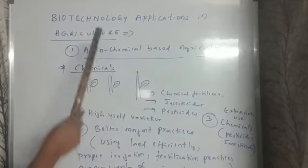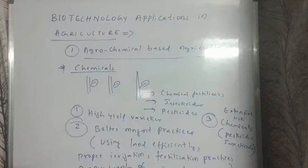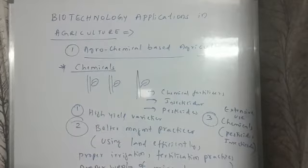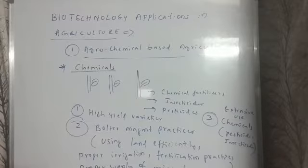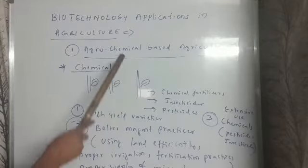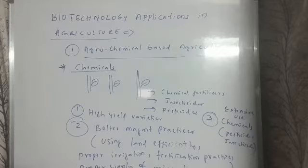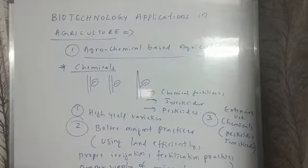In this class, we will discuss about the biotechnology applications in agriculture. Now before getting into the topic, let's understand the methods to increase food production. There are three options or methods to increase food production. The first one is agrochemical based agriculture. The second one is organic agriculture or organic farming. The third one is genetically engineered crop based agriculture.